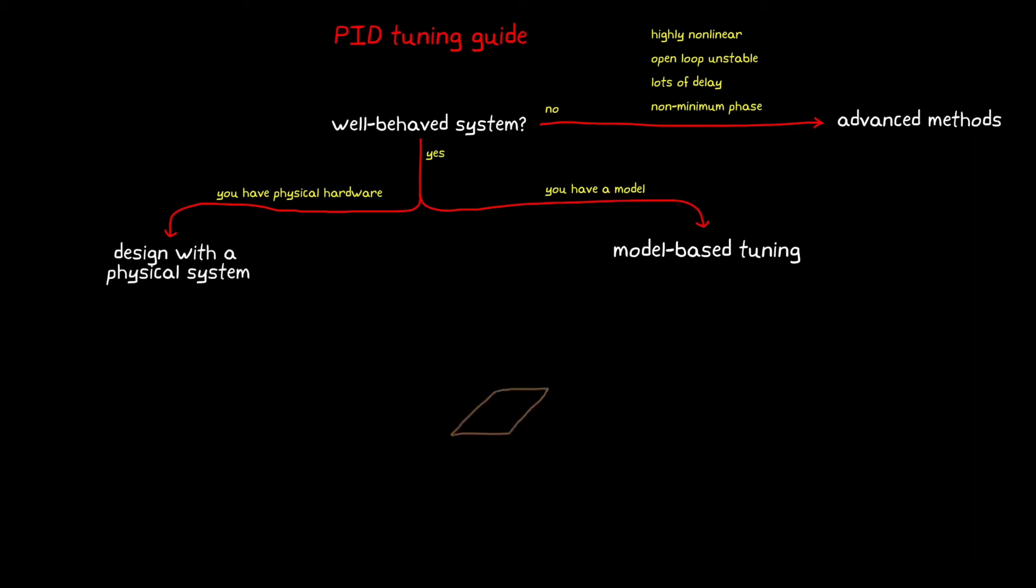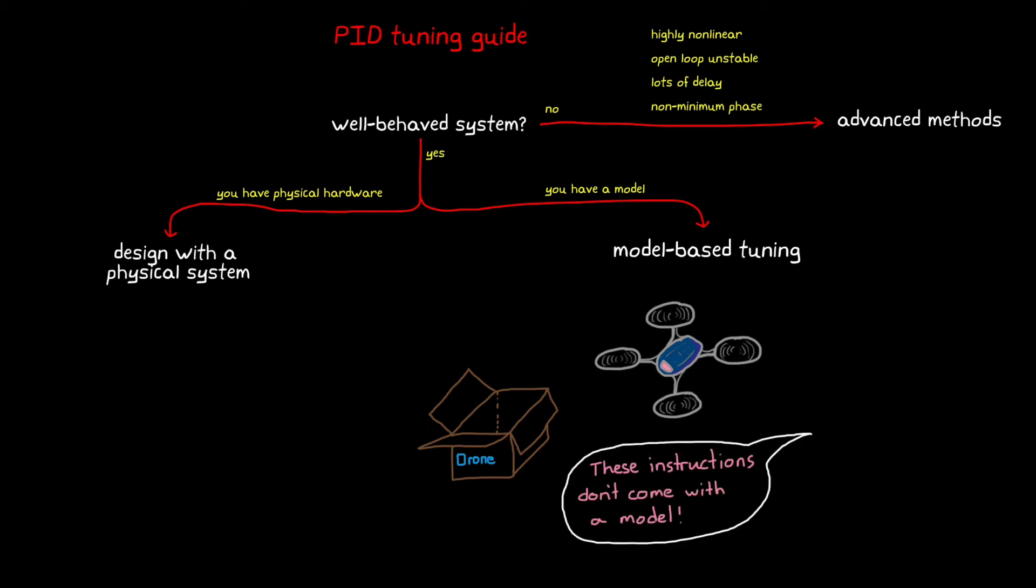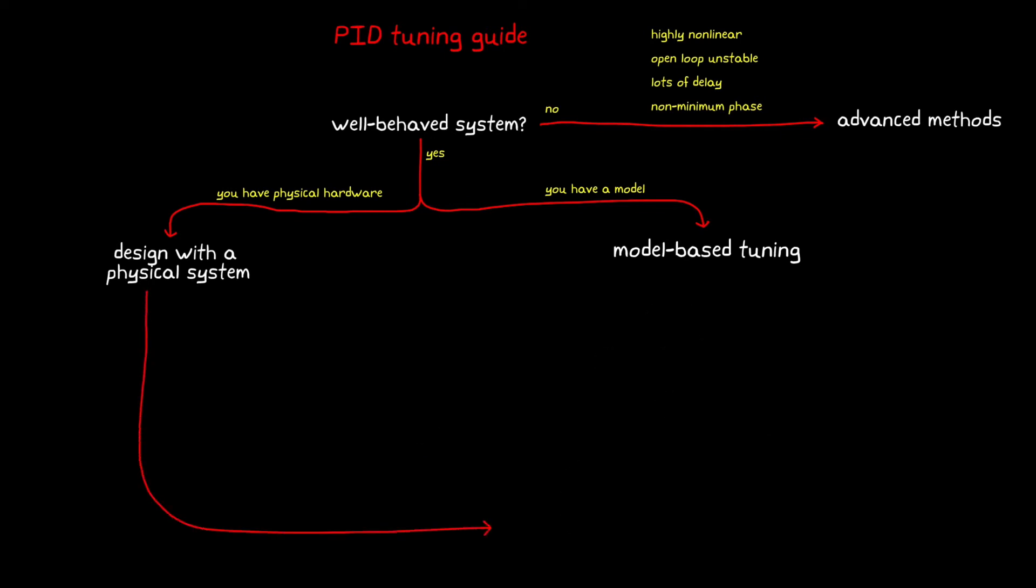This is the case if you purchased a consumer-grade quadcopter, or some industrial machinery like a commercial thermal chamber that allows you to change the PID gains. More than likely, you're not going to get a mathematical model of these systems.